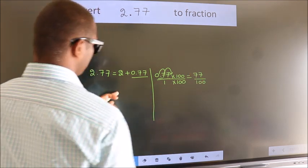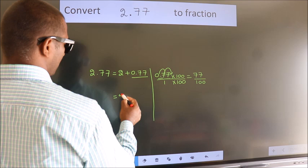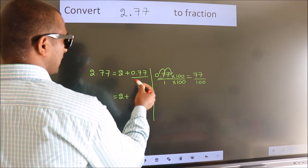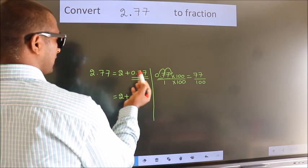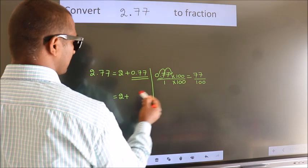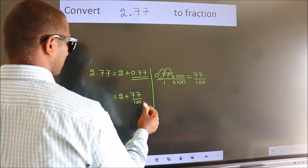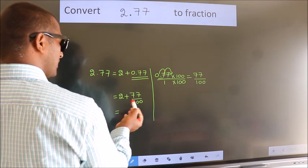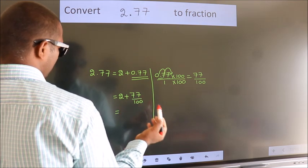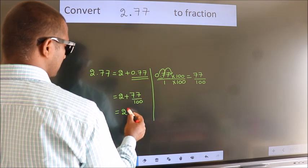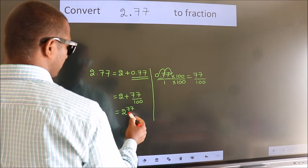Now here 2 plus, in place of 0.77 we write this fraction: 77 by 100. 2 plus 77 by 100. In mixed fraction it is 2 and 77 over 100.